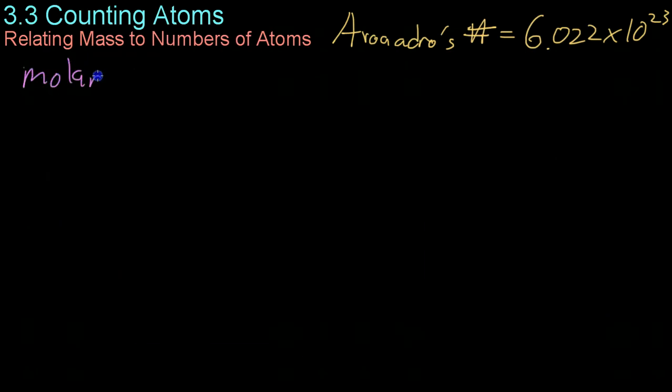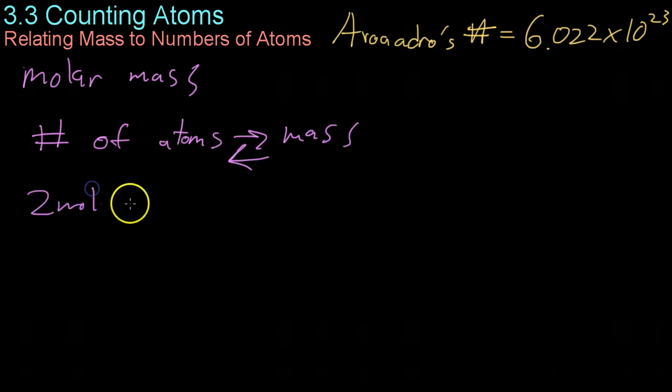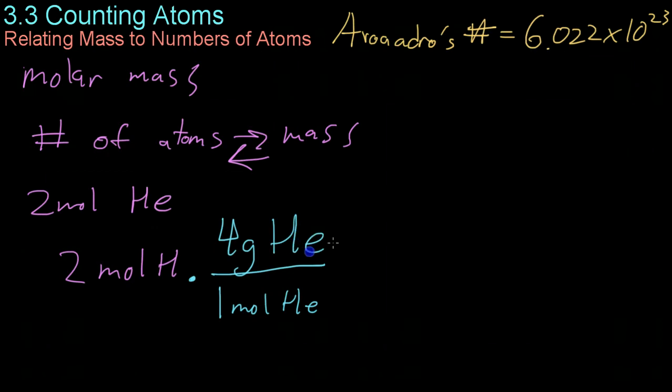Now, you can use this molar mass as a conversion factor if you have to get from number of atoms, which you can't directly measure, to a mass, which you can directly measure. So for example, let's say you need 2 moles of helium for some sort of chemical reaction. Because you can't count out exactly 2 moles of helium, you can use the molar mass, that is, for each 1 mole of helium, it weighs 4 grams. You can use this molar mass as a converting factor to figure out what you need to measure. So you cancel out the units, the moles cancel with the moles, and you get that if you measure out 8 grams of helium, you will have exactly 2 moles of molecules.